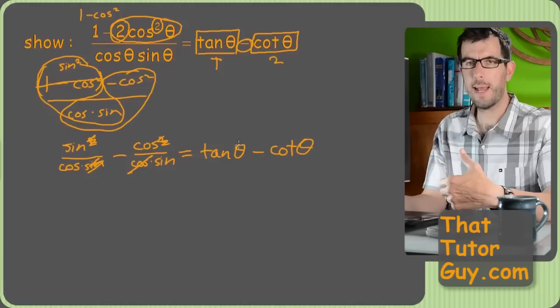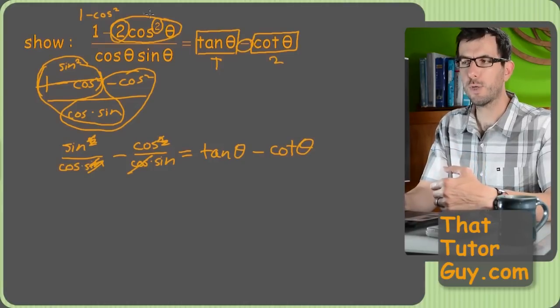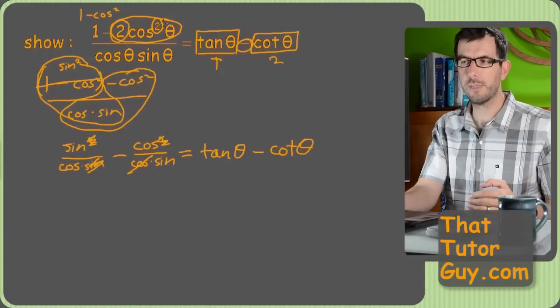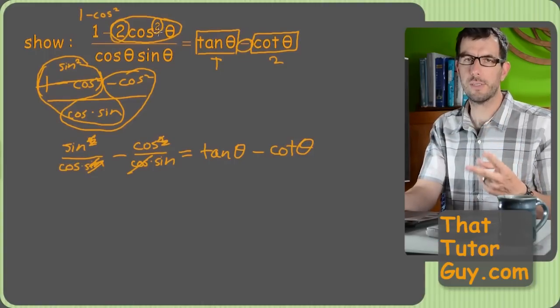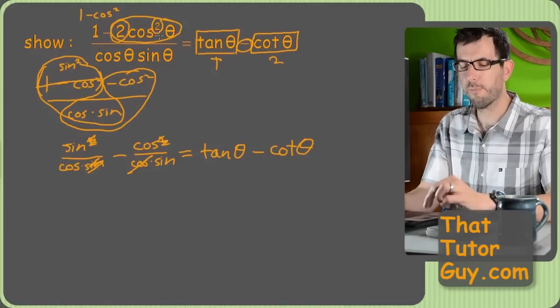Now the key strategy I want to point out here is that instead of making things neater, we made them messier. We took a two cosine squared and turned it into a cosine squared and a cosine squared. We took one big fraction and turned it into separate fractions.